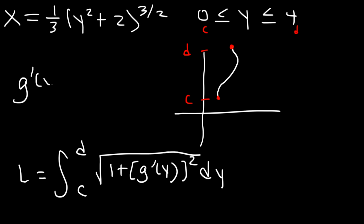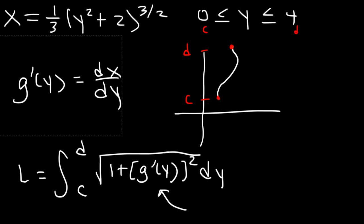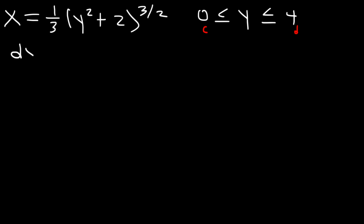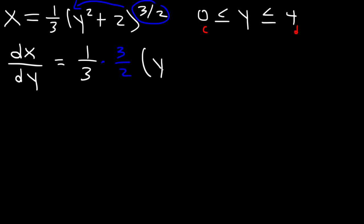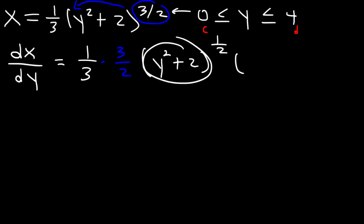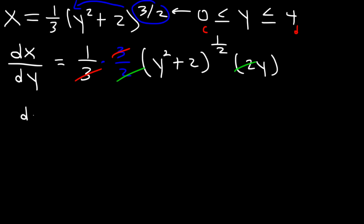Keep in mind that g prime of y is equivalent to dx over dy. So you can use dx over dy squared if you want. Let's begin by finding dx divided by dy. It's going to be 1 over 3, then take the exponent 3 over 2 and move it to the front. Keep what's inside the parentheses the same and subtract the exponent by 1: 3 over 2 minus 1 is 1 over 2. According to the chain rule, differentiate the inside: the derivative of y squared plus 2 is 2y. We can cancel a 3 and a 2, so dx over dy equals y times the square root of y squared plus 2.